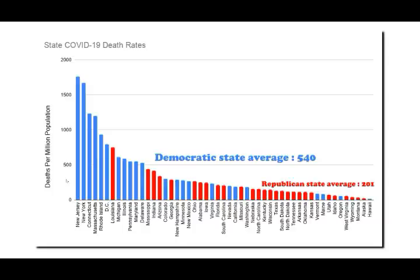This graph shows COVID-19 deaths per million at each of the 50 United States. The two deadliest states are New Jersey and New York, with more than 1,500 deaths per million. I've annotated the graph with Democratic states in blue and Republican states in red. There isn't any strict definition of blue states and red states — for example, Maryland is only 35% Republican but they have a Republican governor — but the definitions I've used are generally fairly accurate. It's pretty easy to see that Democratic-controlled states have much higher death rates than Republican-controlled states. The average deaths per million among Democratic-controlled states is 540, compared to 201 for Republican states. So people in Democratic states are more than two and a half times as likely to die from COVID-19 than people in Republican states.